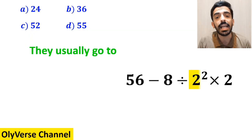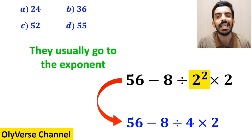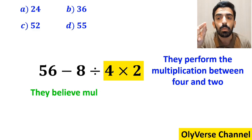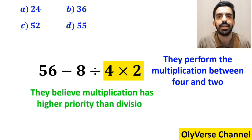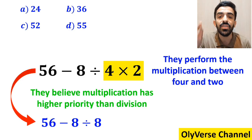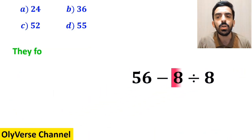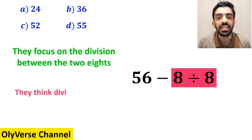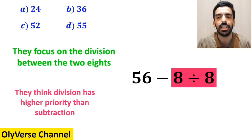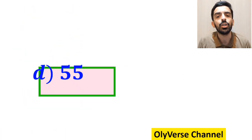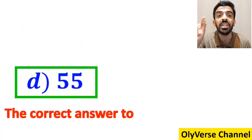In the next step, they usually go to the exponent and simplify it to 56 minus 8 divided by 4, then times 2. Then they perform the multiplication between 4 and 2, because they believe multiplication has higher priority than division. So they rewrite this expression as 56 minus 8 divided by 8. In the final step, they focus on the division between the two 8s, because they think division has higher priority than subtraction, and replace this expression with 56 minus 1, which finally gives them the answer 55. And immediately they conclude that the correct answer to this question is option D.